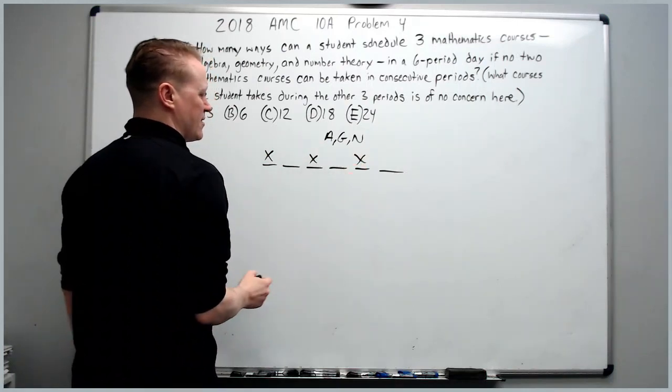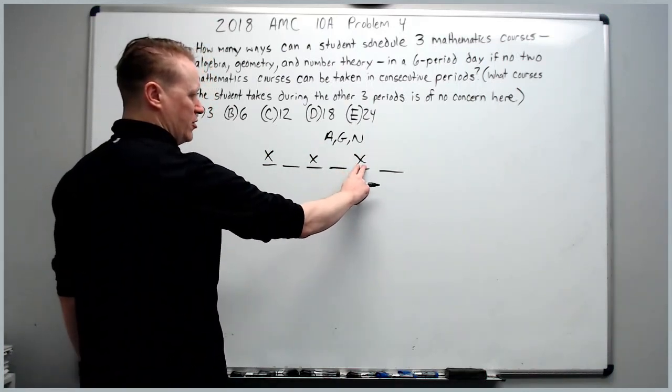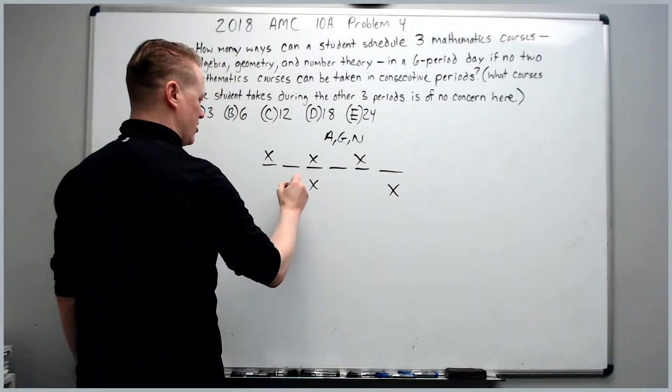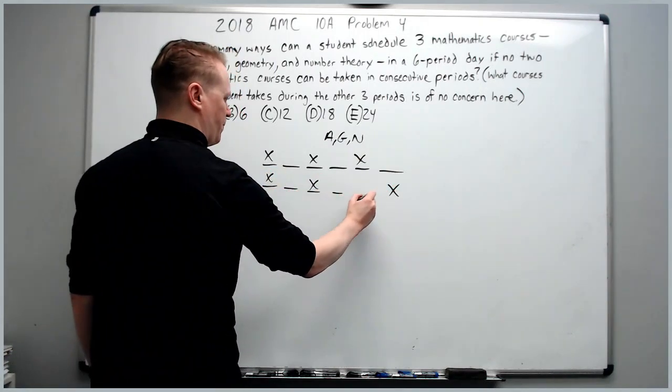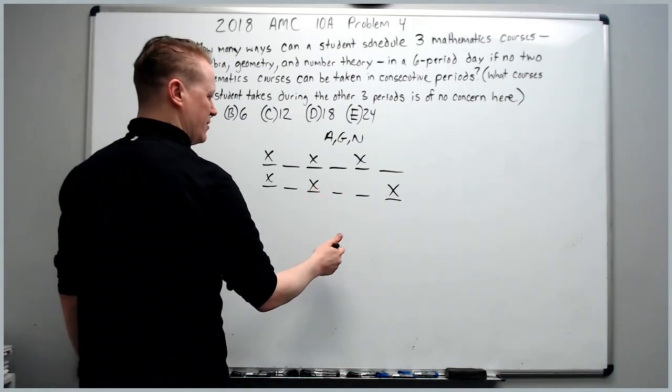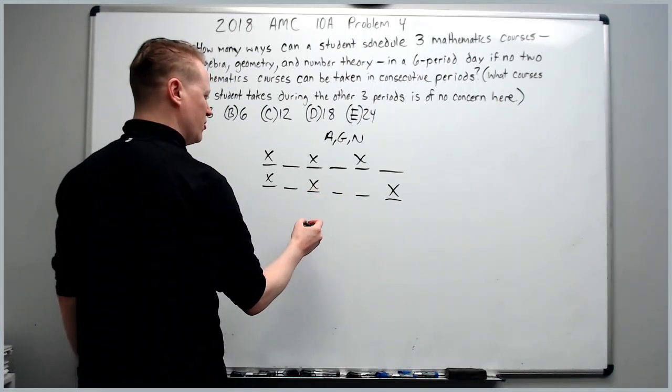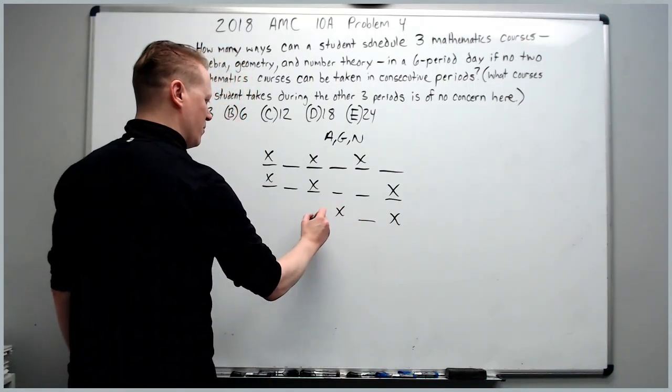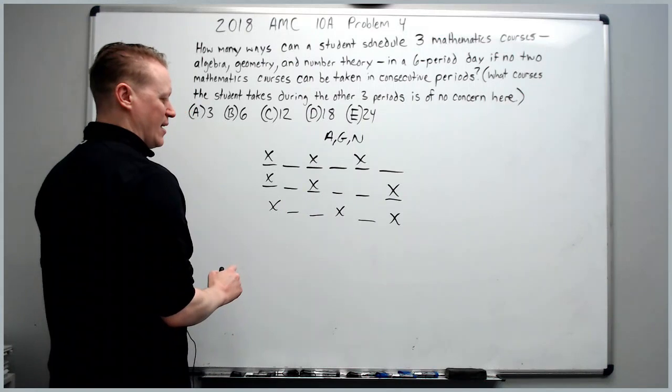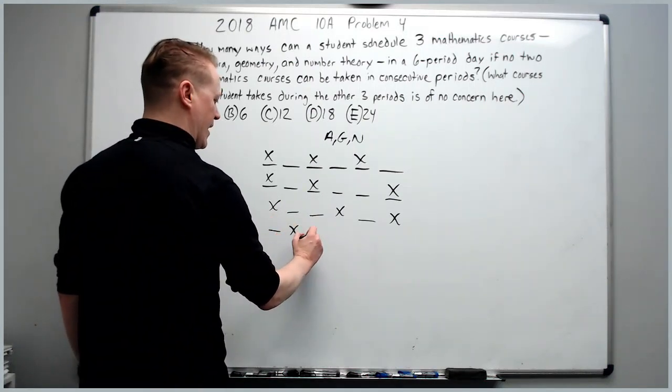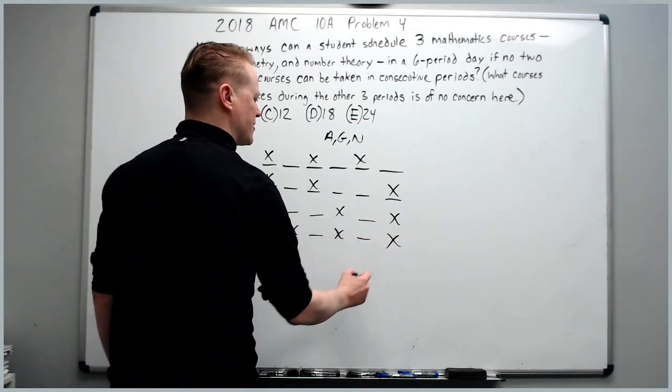We could also then move the third class over to the last period. So you'll get like this. You could then move this one over to here. So you will get X blank X blank blank X. And lastly, you could move this X in as well. So you get blank X blank X blank X.